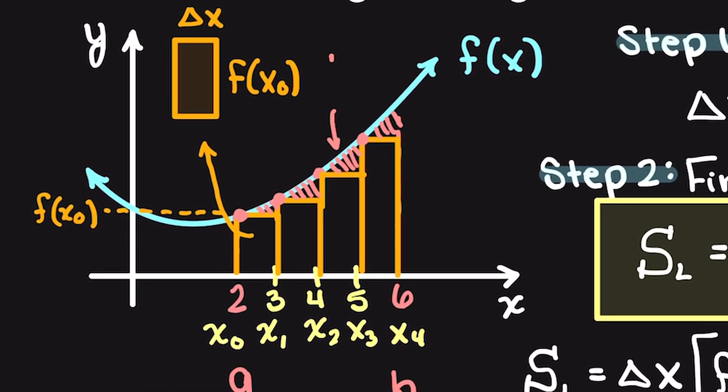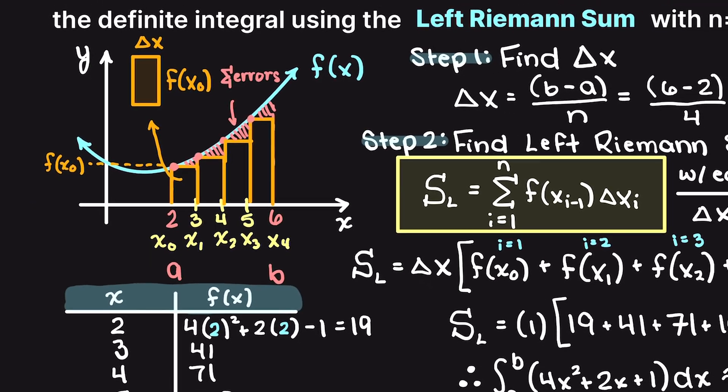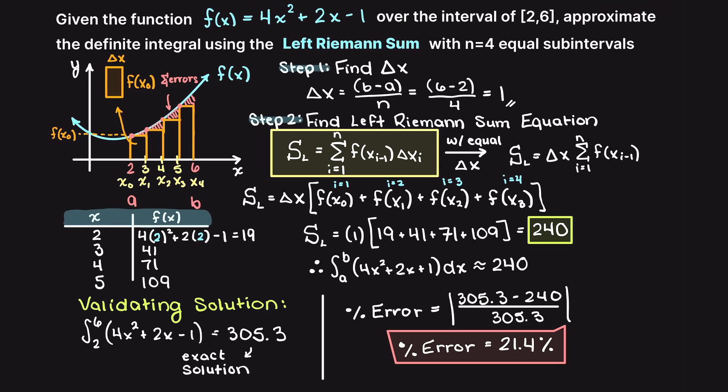As we learned in the past theory video, with a monotonically increasing function, left Riemann sums will always underestimate our integral, which is obvious with these red regions here. So, if on a test you are asked how you might improve this error, you could say that by increasing our n value — increasing our subintervals — we can reduce our error proportionally.